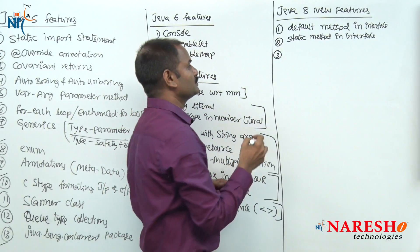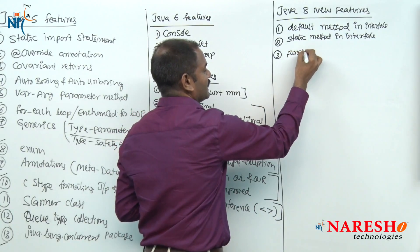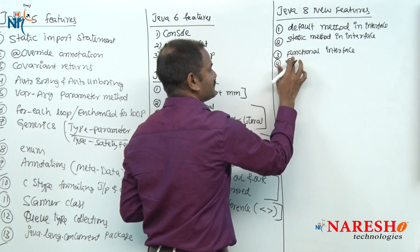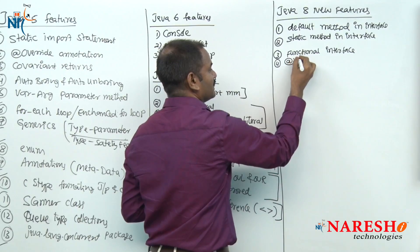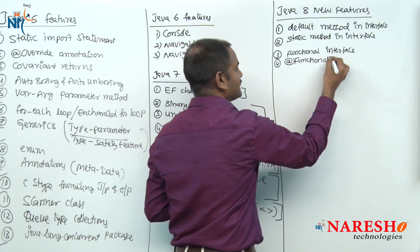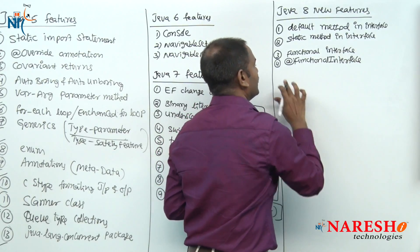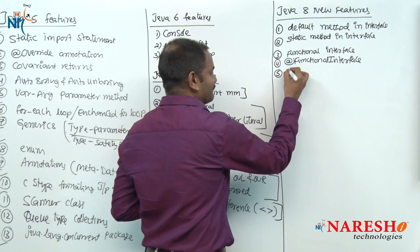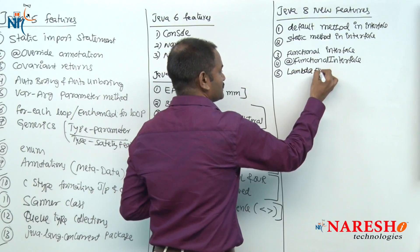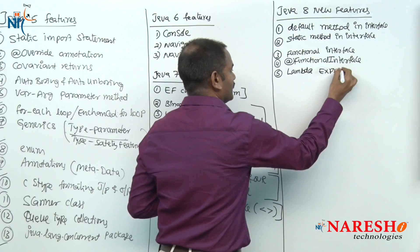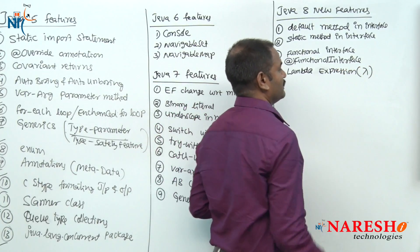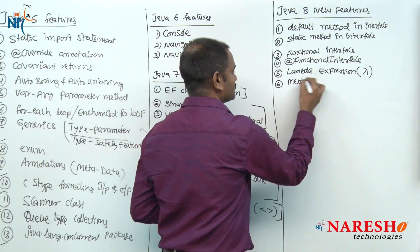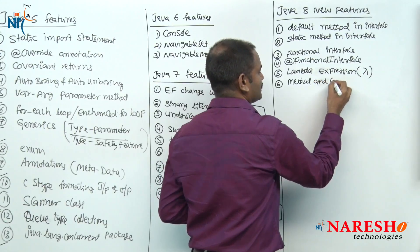The next target is functional programming. To support functional programming we got three concepts. Number one: a new style of interface concept called functional interface. To force the programmer to create only a functional interface, we got a new annotation: @FunctionalInterface. The third concept is lambda expression — a language-level change. Lambda expression comes from mathematics calculus. The next sixth concept is method reference and constructor reference.